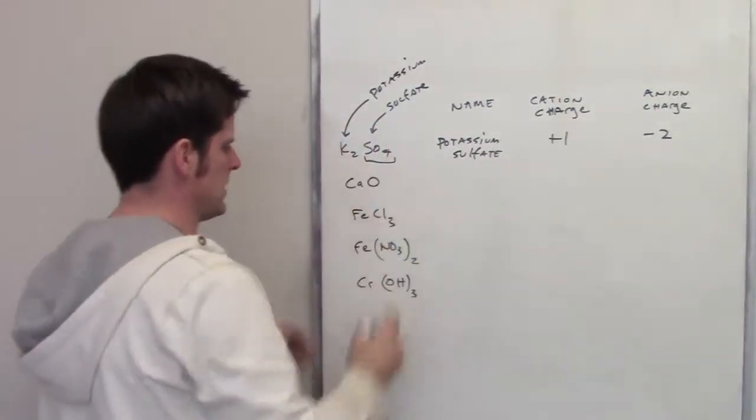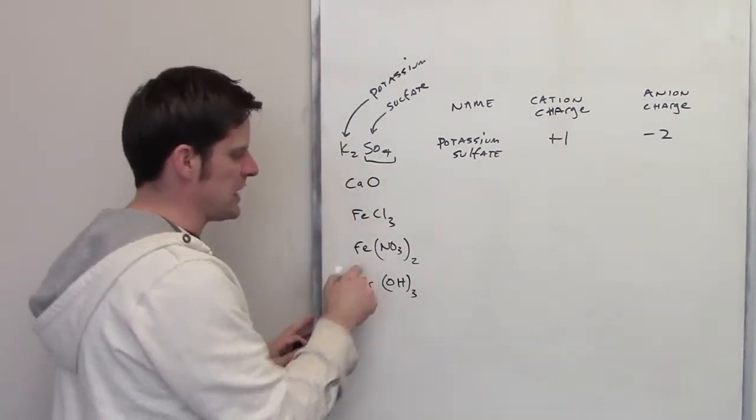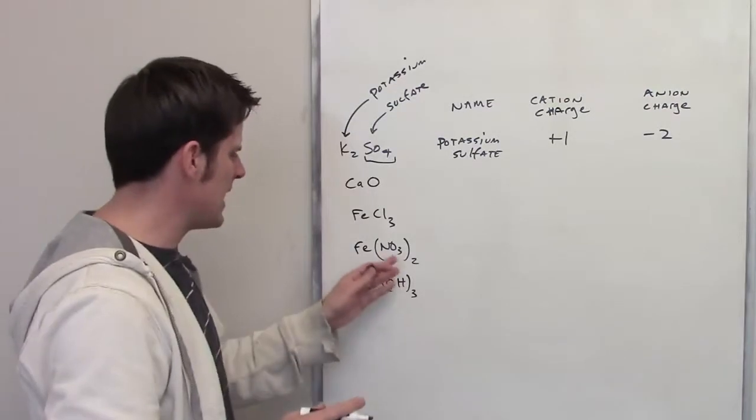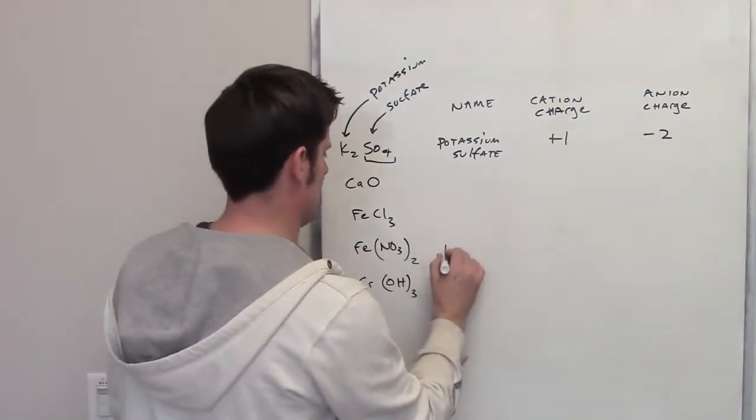Let's go ahead and scroll down through these and I'll see if I can pick a slightly harder one. Let's look at this one here, I've got Fe, which is iron, and then we've got this NO3 thing. Fe, I'll go ahead and write down iron in its name.